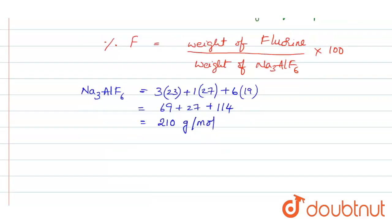Let us calculate the percentage. The percentage of fluorine is equal to weight of fluorine in the compound, which is 114, by 210 into 100. This is nearly equal to 54.2 percentage.